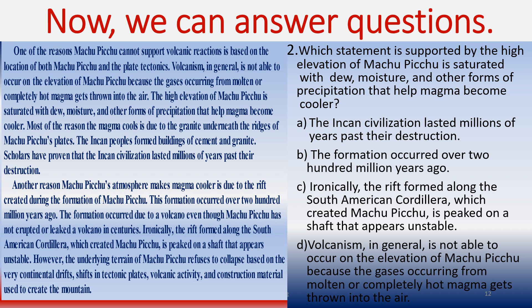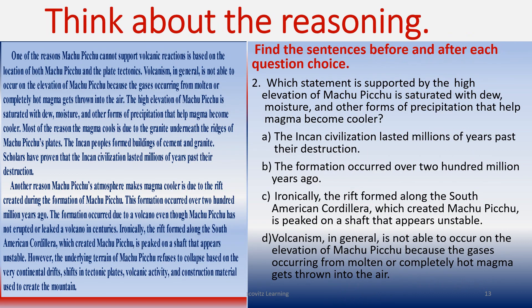For choice B, the sentence reads 'This formation occurred over 200 million years ago,' but that formation refers to what makes magma cooler due to the rift created during the formation of Machu Picchu — which really does not deal with elevation. So you want to try to find that connection, and since you can't, move on to the next slide.